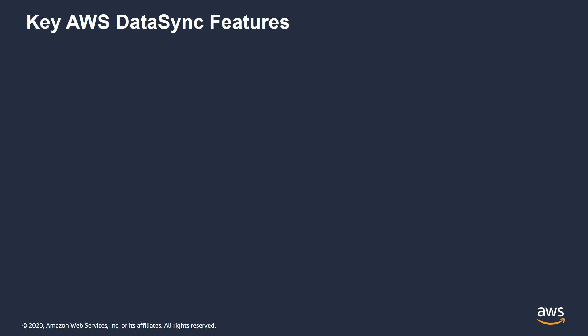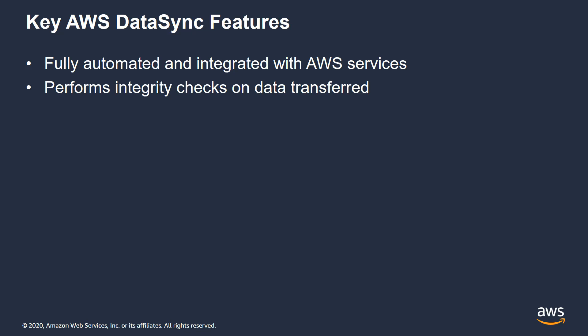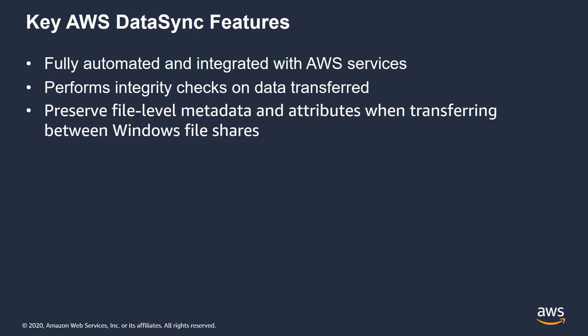Let's summarize some of the key AWS DataSync features that help with data migration. First, it's fully automated and integrated with AWS services — it integrates with CloudWatch for monitoring, IAM or Identity and Access Management for security, and also integrates with backend destination services such as Amazon S3, Amazon Elastic File System or EFS, and Amazon FSx Windows File Server. It performs integrity checks on the data transfer, checking the source and destination data to make sure data transfers correctly. And it preserves the file-level metadata and attributes when transferring data between Windows File Shares — preserving the NTFS permissions and share permissions from your on-premises Windows File Servers into Amazon FSx Windows File Server.